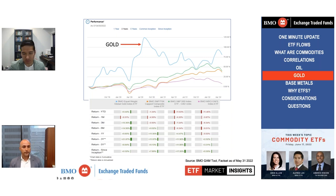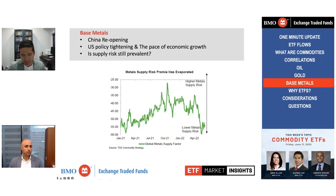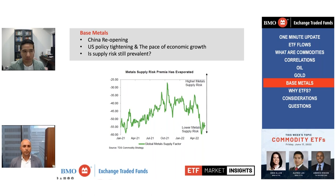Let's switch gears again and talk about base metals like copper, lead, nickel, and zinc, typically used for industrial or manufacturing purposes. What are the factors impacting this commodity today? These are industrial or manufacturing metals in general, so they should trend with trends in the economy, growth, and manufacturing. When it comes to batteries — a growing trend for the space — they should also benefit from that direction.